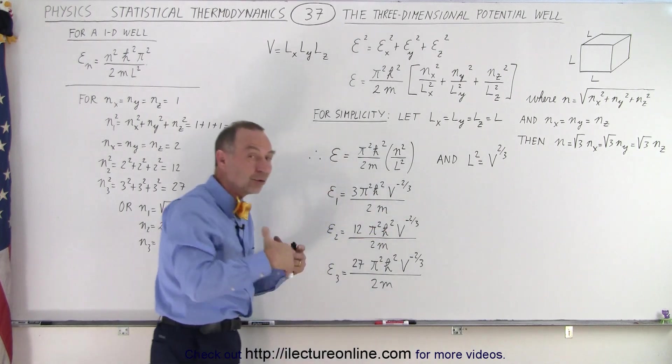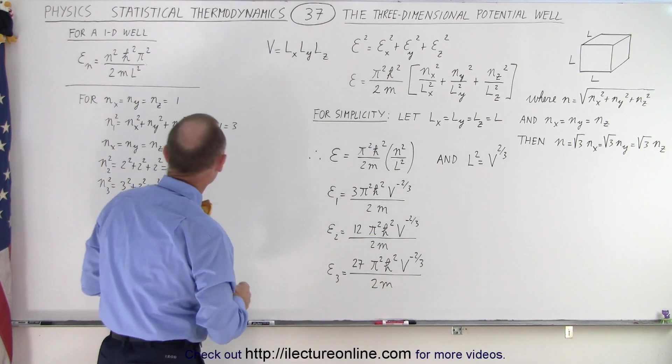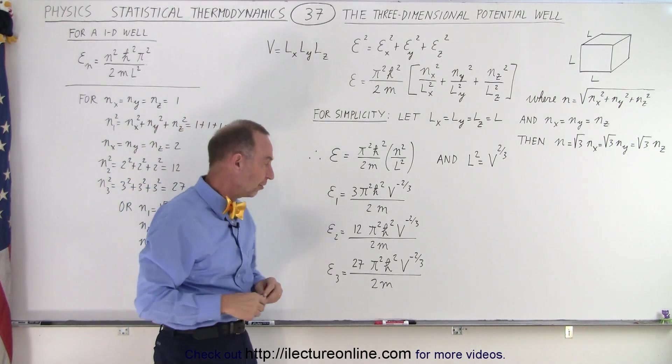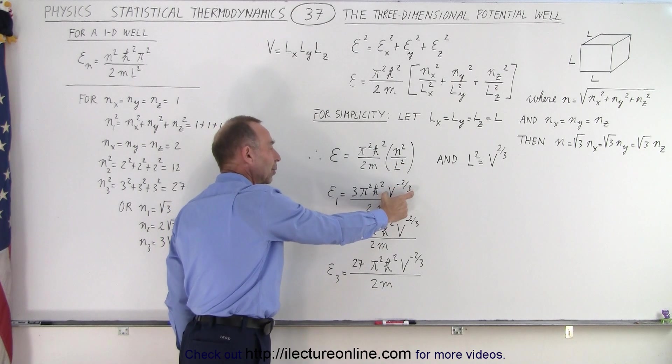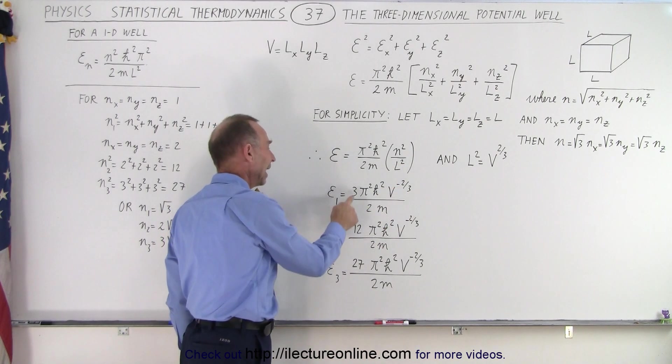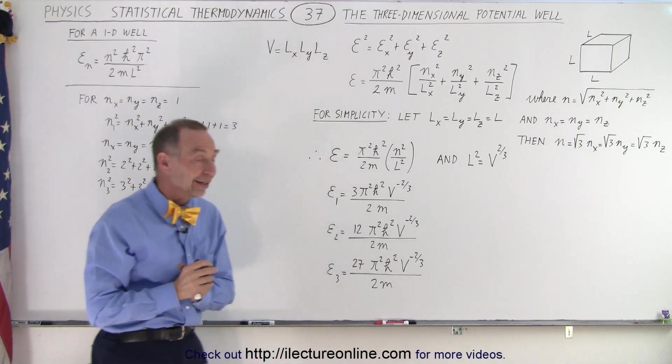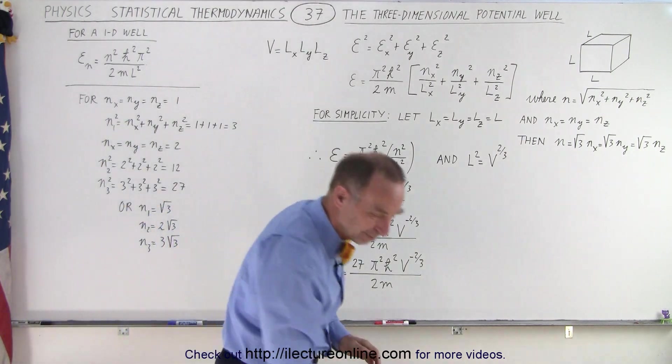So you can see that the increase of energy is different for a three-dimensional well compared to a one-dimensional well. So that shows you the difference. It's essentially that we have l squared in the denominator can be written as v to the minus two-thirds, and the n squared will be three, twelve, twenty-seven, and so forth. And that is how it's done. Thank you.